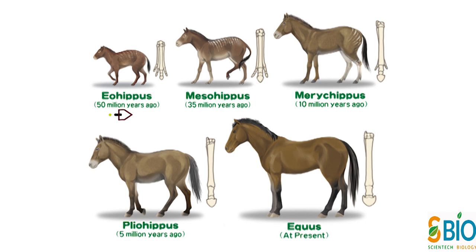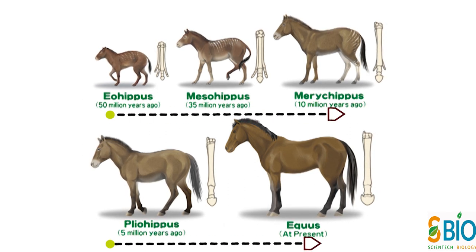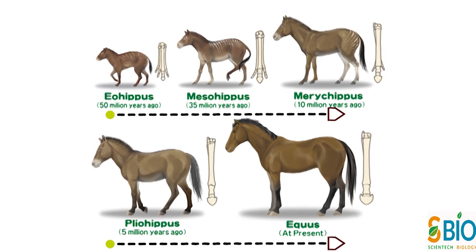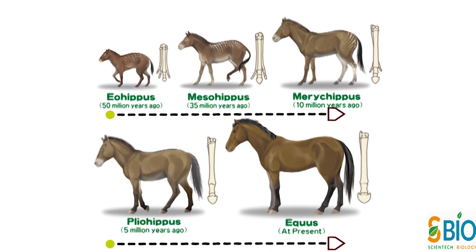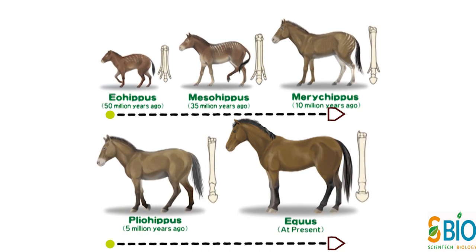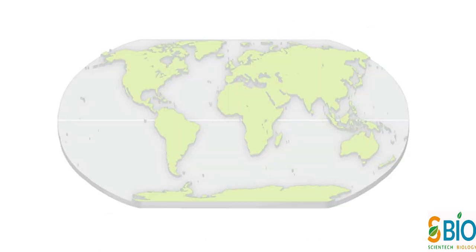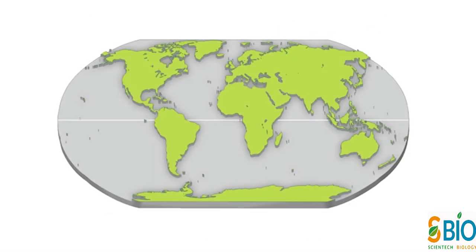इस प्रकार Horse के इस Evolutionary Sequence में Hyracotherium से लेकर Present-day Horse यानि Equus तक इनके आकार में वृद्धि, टांगों का लंबा होना, बाईं और दाईं अंगलियों का क्रमशः कम होना और बीच की अंगली का Hoof में बदलना — ये Main Changes हैं। इसके अलावा दुनियाभर में Species Distribution के Patterns भी Evolution के Clues प्रदान करते हैं।